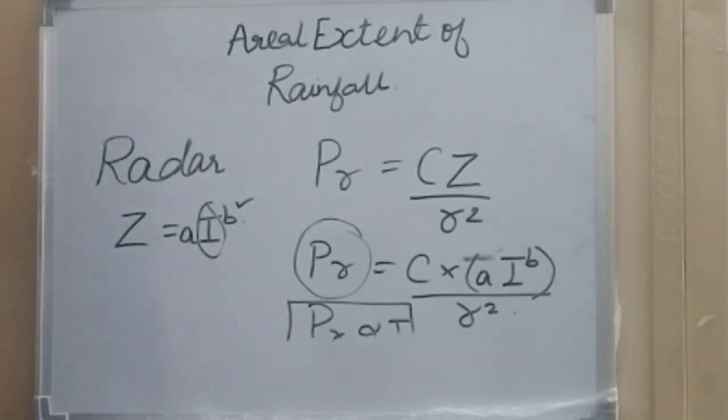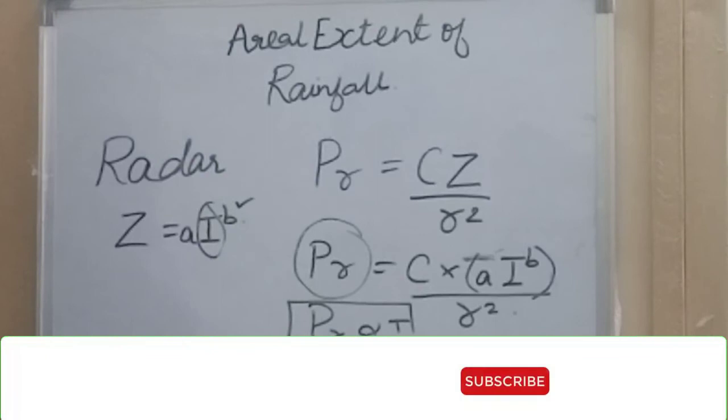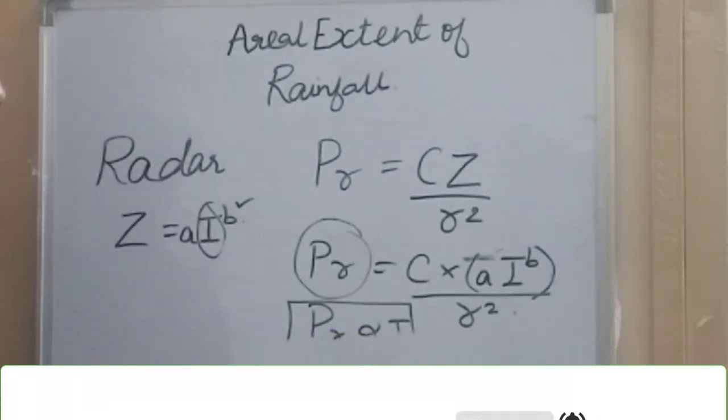In Indian conditions, generally the wavelength of these radars are 5 to 10 centimeters. Five centimeter wavelength is used for light rainfall and 10 centimeter wavelength for heavy rainfall. Thank you for watching our video. Please subscribe to our channel. In the next video we will discuss rain gauge density - how many rain gauges are required in a particular area to get rainfall data with certain accuracy.